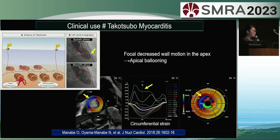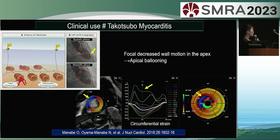The next case is takotsubo cardiomyopathy, which is characterized by wall motion abnormalities in the apical region of the heart. In this case, the pink line representing the septum in the apical segment is convex upwards. When viewed in the bird's eye plot, local wall motion impairment from the apical anterior wall to the septum is observed, quantitatively indicating the typical pattern of takotsubo cardiomyopathy.